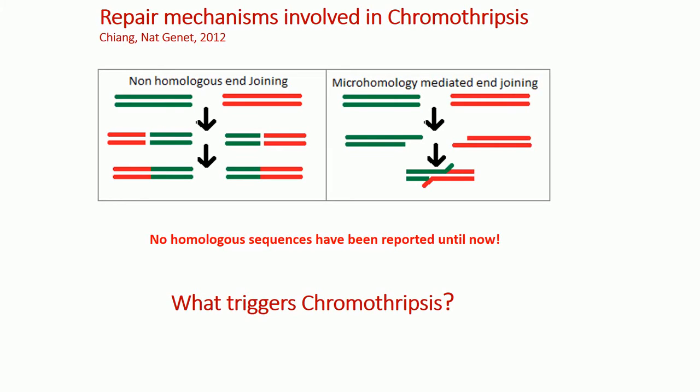Although the DNA repair mechanisms involved in chromotripsis have been described, the mechanisms driving the localized shattering process remain unclear.